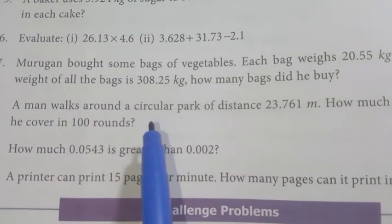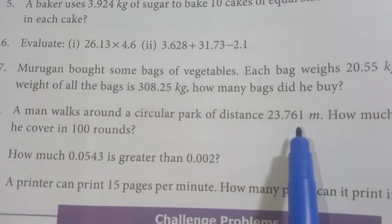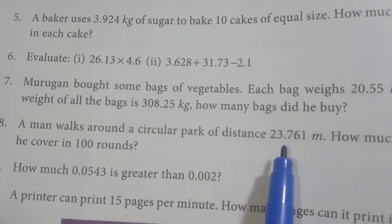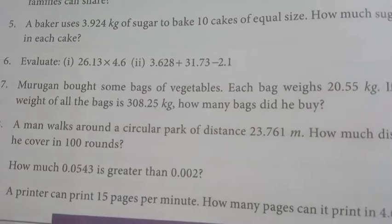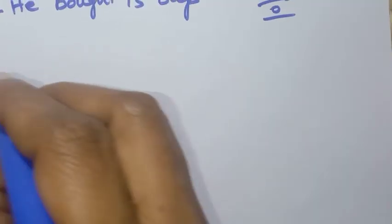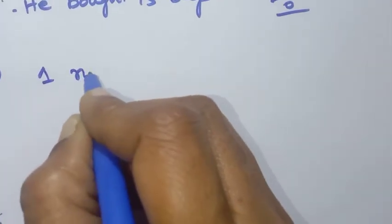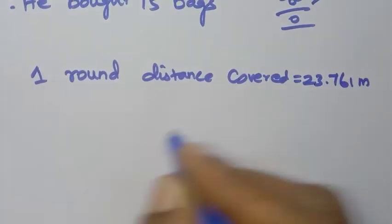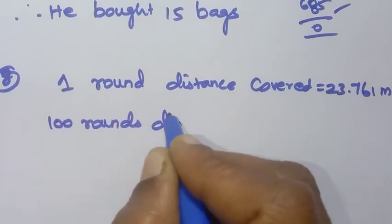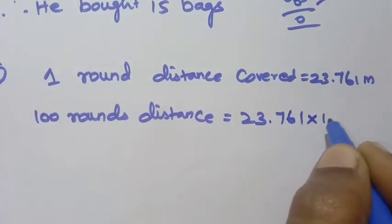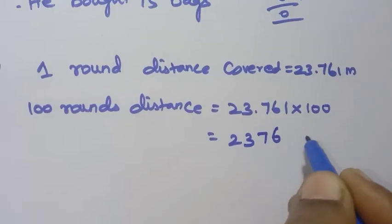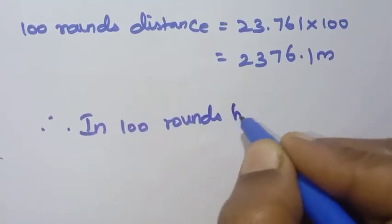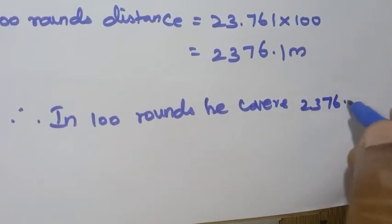Eighth question: A man walks around a circular park of distance 23.761 metres. How much distance will he cover in 100 rounds? In 1 round, distance covered is 23.761 metres. So 100 rounds distance equals 23.761 multiplied by 100. Multiplying by 100 shifts the decimal: 2376.1 metres. Therefore in 100 rounds he covers 2376.1 metres.